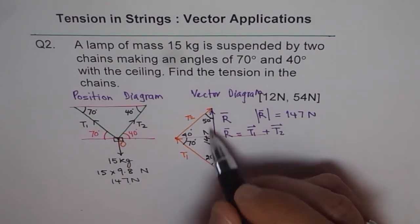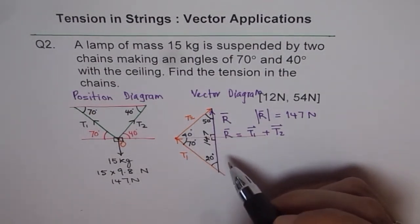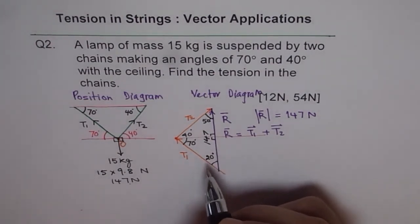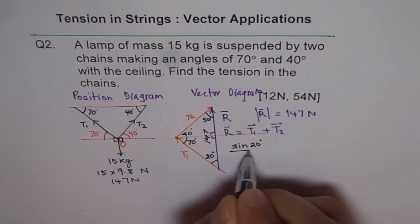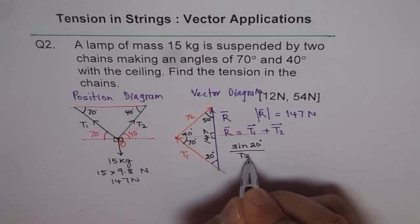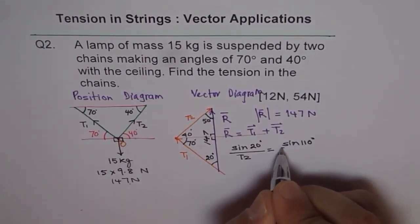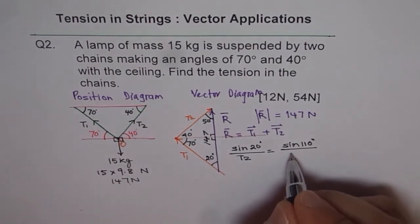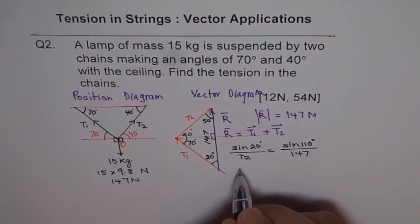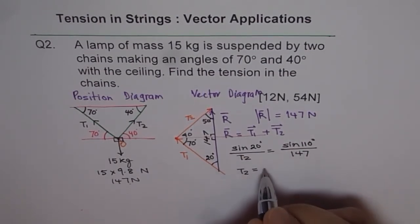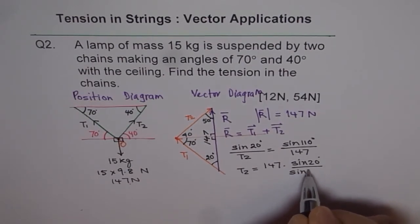Now we will use the sine law to find tensions T1 and T2. Starting with T2: sine of 20 degrees over T2 equals sine of 110 degrees over the known side of 147. So T2 equals 147 times sine of 20 degrees divided by sine of 110 degrees.